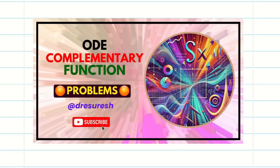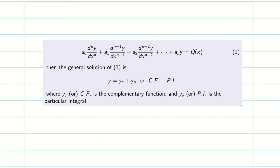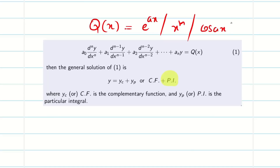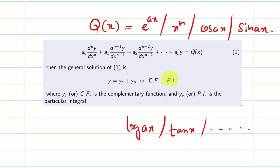In session 2 we learned how to find CF for a given ODE. If you haven't watched those two videos, go to the playlist, watch them first, and then come back to this session. Now in this session we are going to learn how to find PI. PI depends on the right-hand side of the equation, q(x). The RHS may be e^(ax), a polynomial x^m, cos(ax), sin(ax), log(ax), tan(ax), and so on — we will cover each one in the upcoming videos.